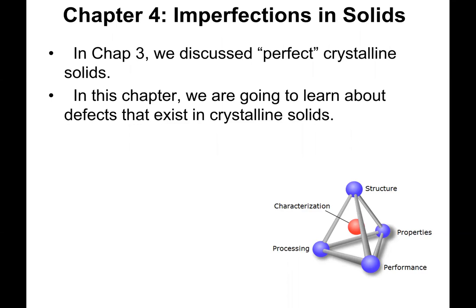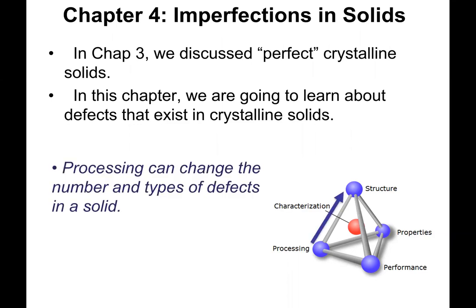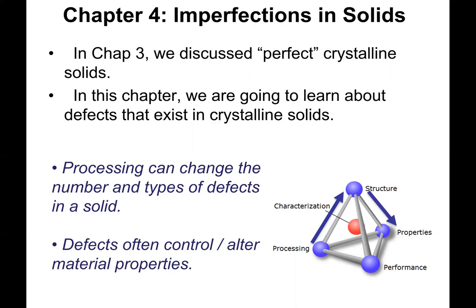Now, one of the reasons why we're interested in this is because the defects often dominate the properties of a solid. And equally as important, through processing techniques that we'll see later in this textbook, processing techniques can change the number and types of defects. Since they can change the number and types of defects, that is their structure, these defects can control or alter properties. We now have a direct way through processing to affect the properties of materials.